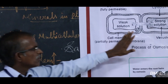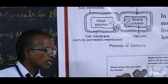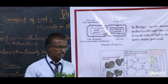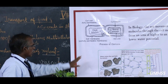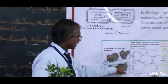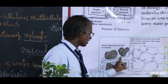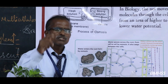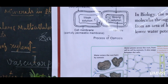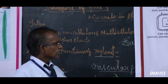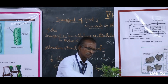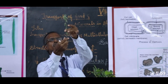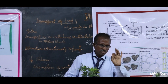Osmosis is a very important process by which plants absorb water from the soil and it enters into the plant. The plants take water - it enters the cells and moves from one cell to another cell, and finally goes into the xylem vessels. Osmosis is the important phenomenon mainly to absorb water through the presence of root hairs.